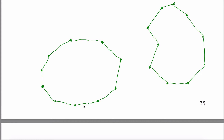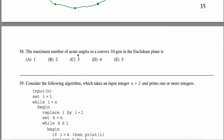One nitpicky thing: the maximum number of acute angles — they're really referring to what are called interior angles, also called internal or vertex angles. There's also an angle called an exterior angle that is often defined when talking about a convex polygon. One way to solve this problem is to look at the exterior angles, not the interior angles.